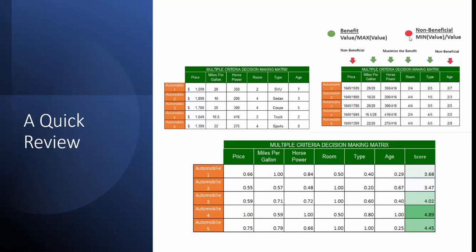We specified which were beneficial and non-beneficial. Once we did that, we used simple formulas to normalize our data and get that on the same scale. Once we did that, we summed across each row, which equaled an option and got a performance score and ended up with the highest score for automobile four.